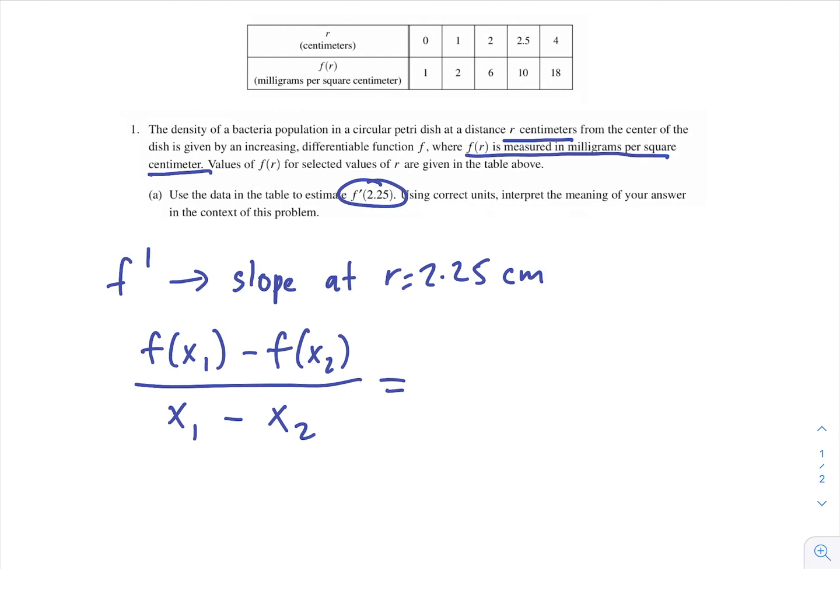So we have this data, and we need to find which two data points we would plug into our slope equation to find that slope. So 2.25 would sit right here in the data table if there was an entry for it. So what this means is that we should probably take these two points into consideration to find our slope. That's the midpoint between 2 and 2.5.